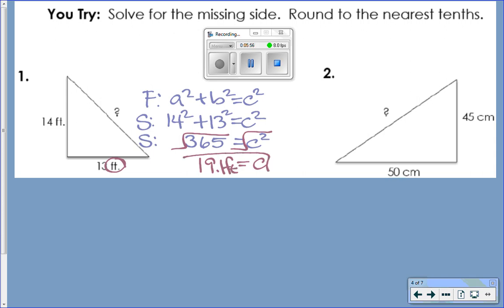169 plus 196 is 365. And then how do we solve for just C? The square root of C squared is just side length C. Square root of 365 to the nearest tenth is 19.1. Include our units.